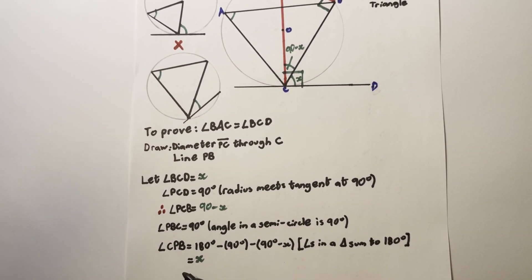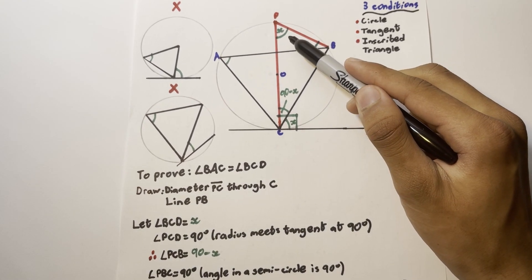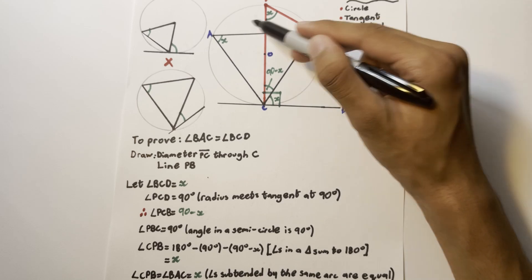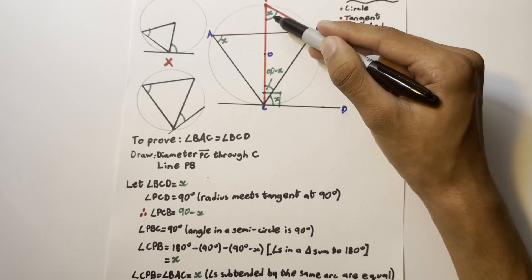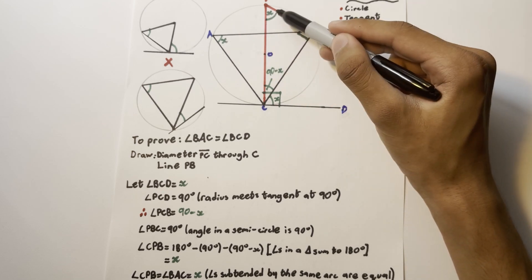Once we tidy up the algebra, we find that CPB is equal to x, so we mark that in our diagram as well. Finally, notice that angles CPB and angles BAC are subtended along the same arc, therefore, using the rule we covered in our last video, this is also equal to x.